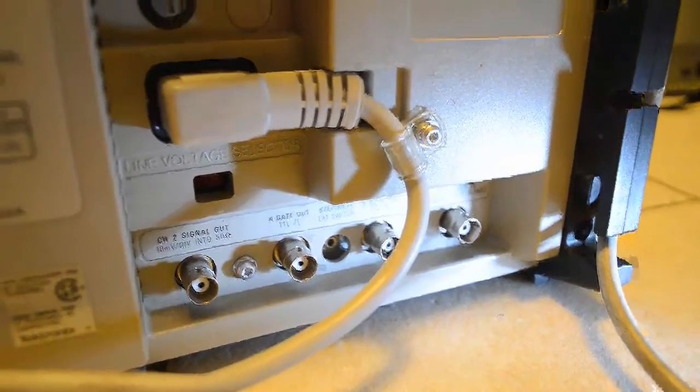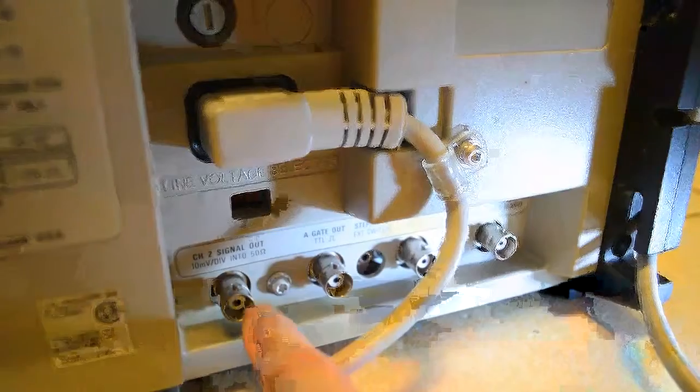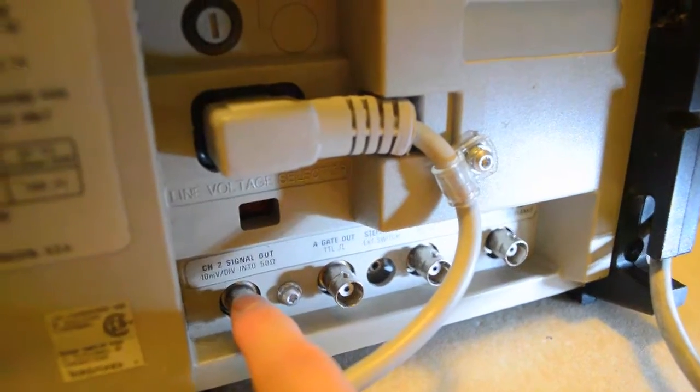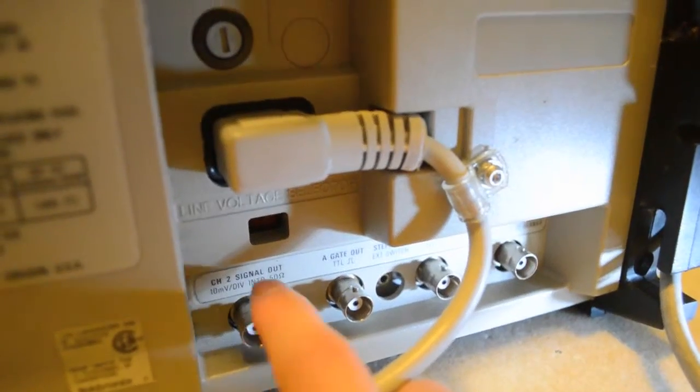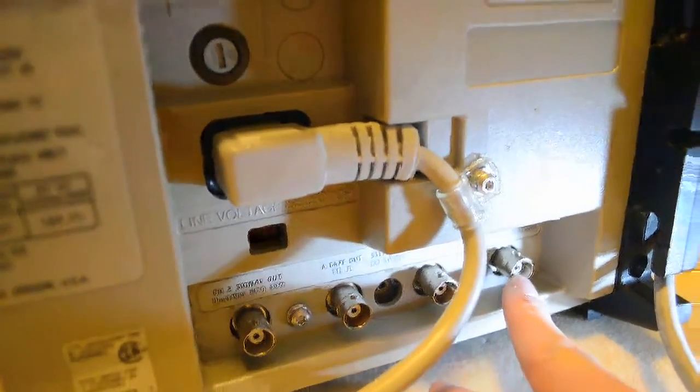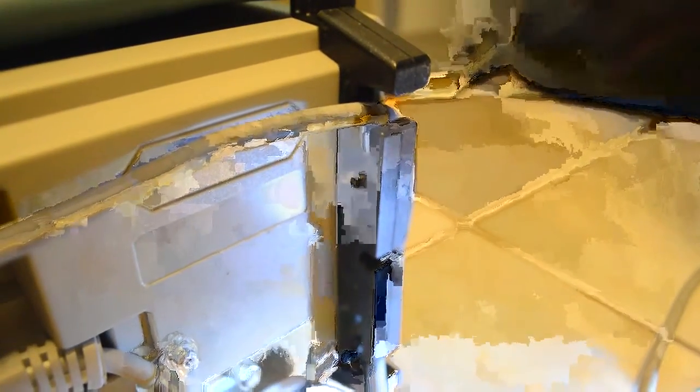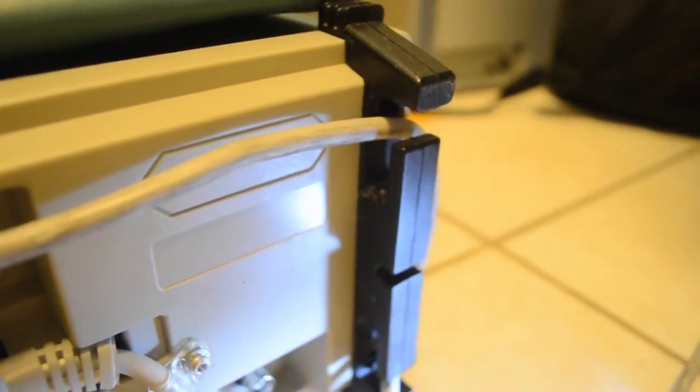Okay, so I'm going to start in the back. This whole unit looks pretty good for having been shipped across the US. We have four BNC jacks in the back, and we have a channel 2 signal out. It's a representation of what you put in the channel 2. Two gate outputs, A and B, and we have our external Z-axis input. And also, we have a free dead spider hanging out there. I'll clean that out in a sec.